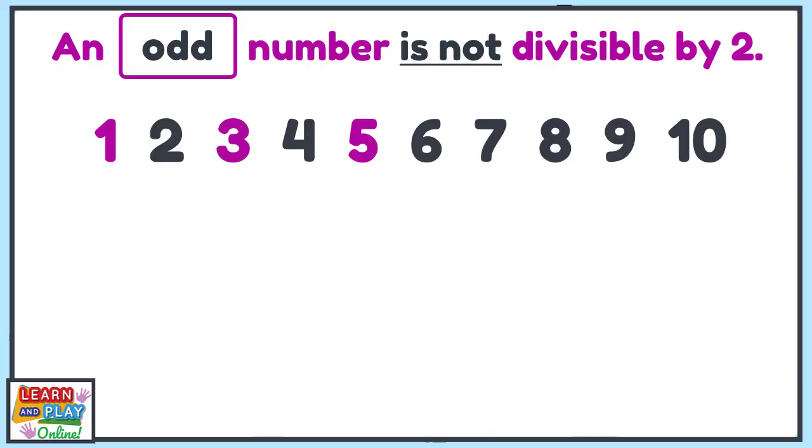The pattern shows that the next odd numbers will be 7 and 9. This pattern will continue as you count, which means that all numbers that end in 1, 3, 5, 7 and 9 are all odd numbers.